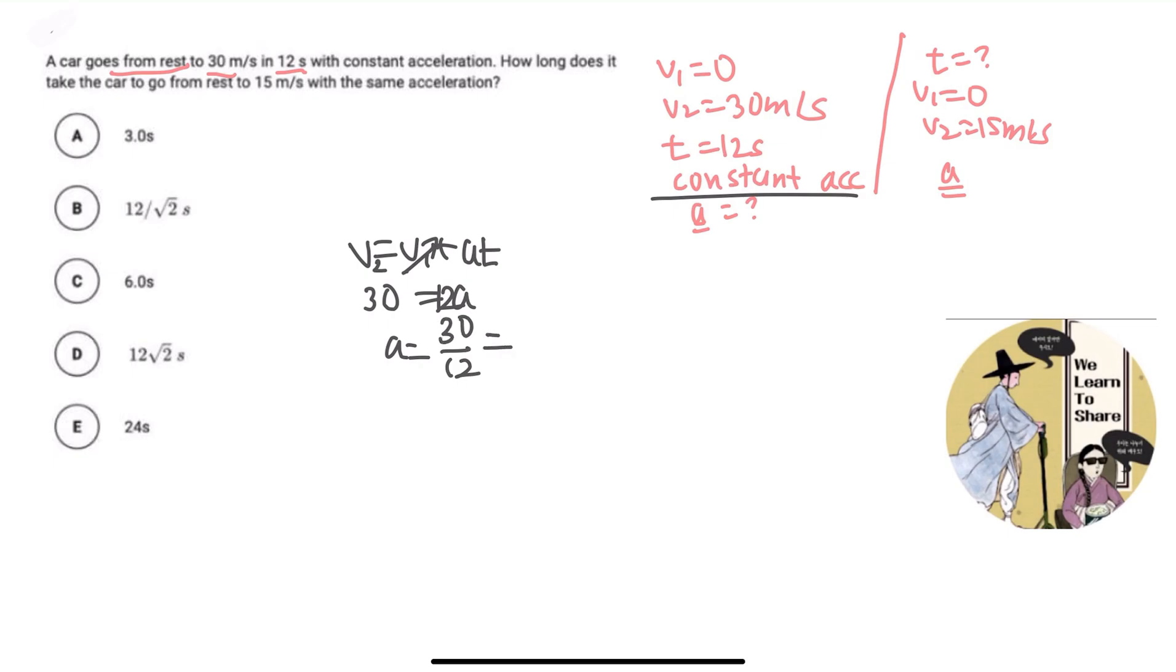And then a would be 30 over 12, which is similar to 6 over 15 and 2 over 5, so 2.5 seconds... no, 2.5 meters per second squared.